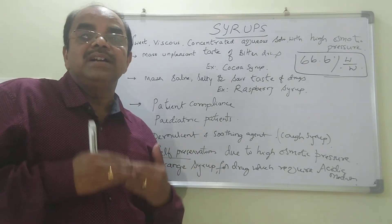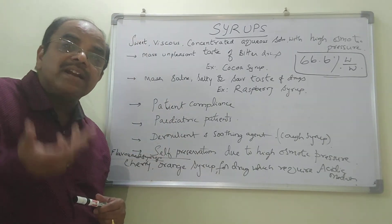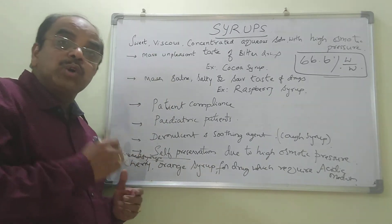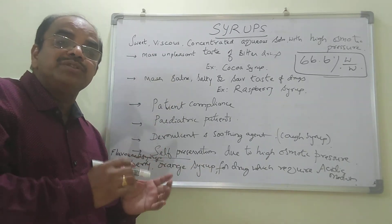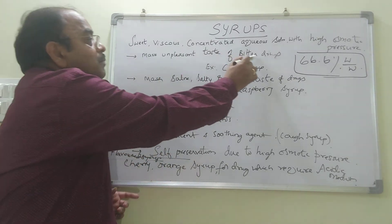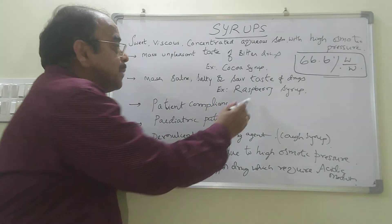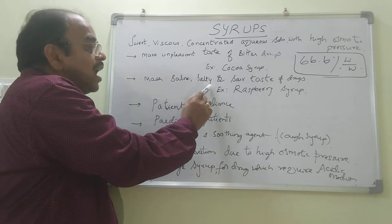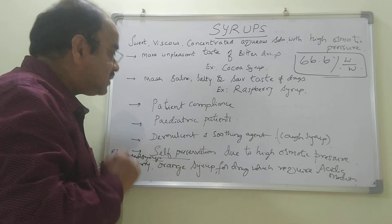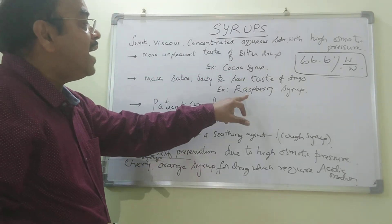Let's go to the details of the syrups. Syrups are used to mask the unpleasant taste of bitter drugs. For example, cocoa syrup is used to mask the unpleasant taste of bitter drugs. Raspberry syrup is used to mask the saline, salty, and sore taste of drugs. These are two flavored syrups — cocoa syrup and raspberry syrup.